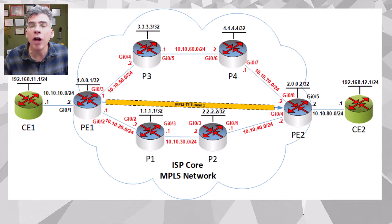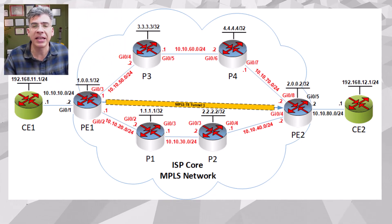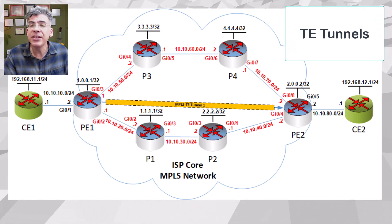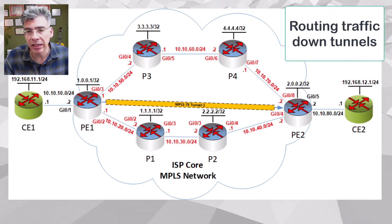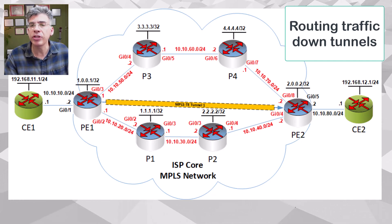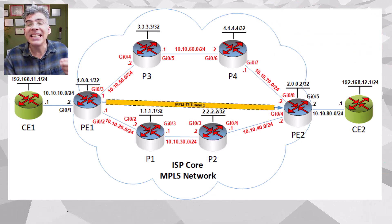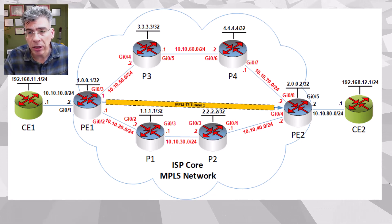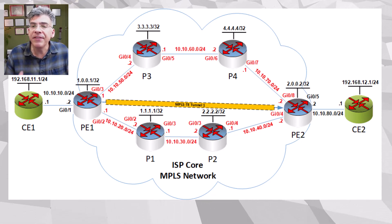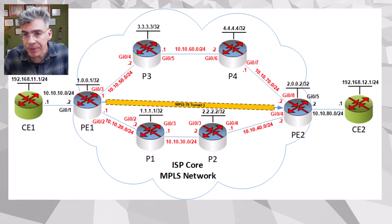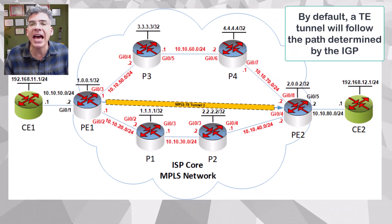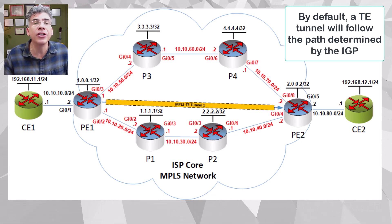In our quest to understand MPLS TE, we've gone over several different topics, including the establishment of TE tunnels and methods for routing traffic down those tunnels. What we haven't focused on very much yet is the specific path that these tunnels take through the topology. A tunnel that's configured with a dynamic path option and no constraints at all will simply follow the same path as the route determined by the underlying IGP.